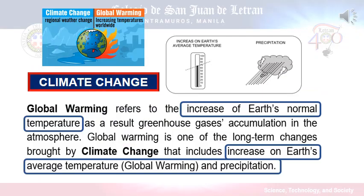Let's talk about climate change and global warming. When we talk about global warming, it refers to the long-term warming of the planet. Global warming is expected to have far-reaching, long-lasting, and in many cases, devastating consequences for planet Earth. Climate change encompasses global warming but refers to the broader range of changes happening to our planet. This includes rising sea levels, shrinking mountain glaciers, accelerating ice melt in Greenland and Antarctica, and shifts in flower and plant-blooming times. These are all consequences of the warming, which is caused mainly by people burning fossil fuels and putting out heat-trapping gases into the air. In summary, global warming refers to the increase in Earth's average temperature, while climate change includes global warming and changes in precipitation.